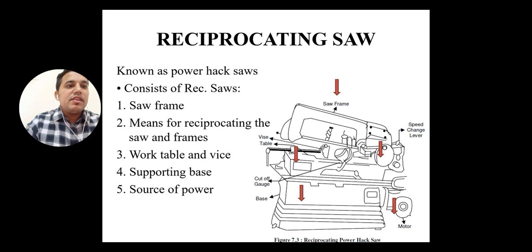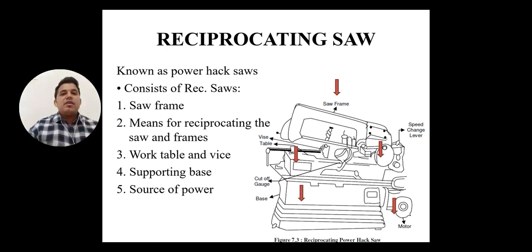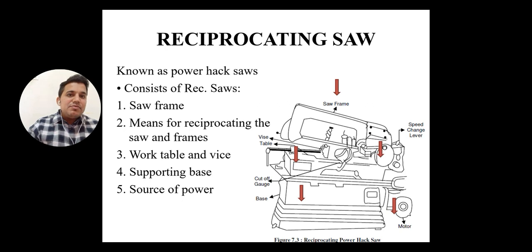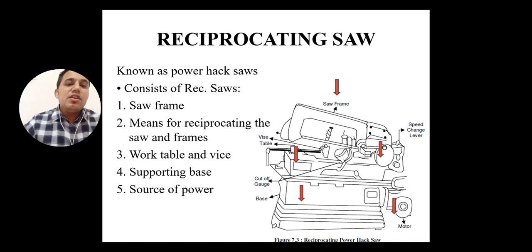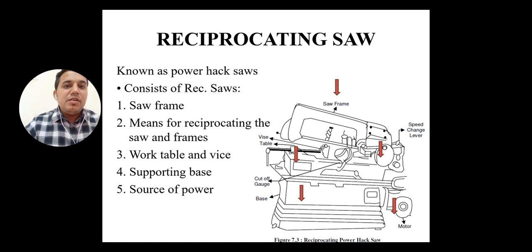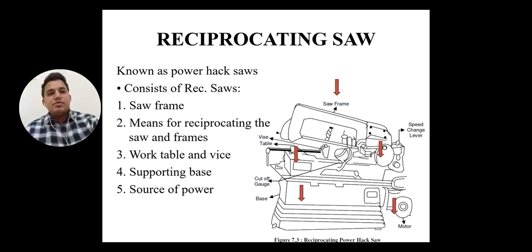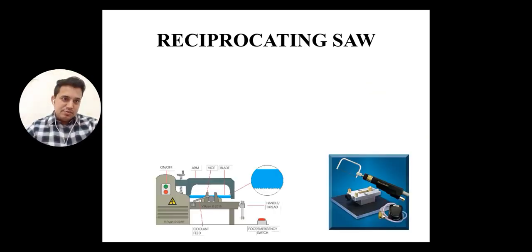The fifth component is the power source. We realize the motor or gear arrangement, but nowadays we use just the motor connected by a belt. These are the main components of the reciprocating sawing machine. Most of the operations are hydraulically controlled.